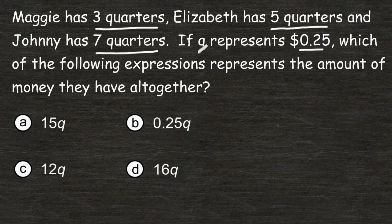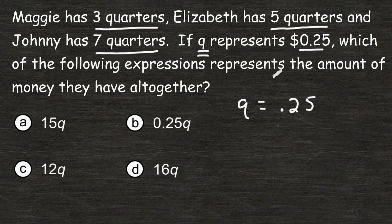Well, the first thing we want to do is see what the given variable in the problem represents, and it says that Q is equal to 25 cents. And we have to figure out what is an expression that represents the amount of money that all three people mentioned in the problem have all together.